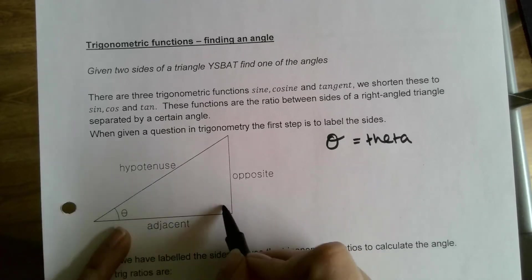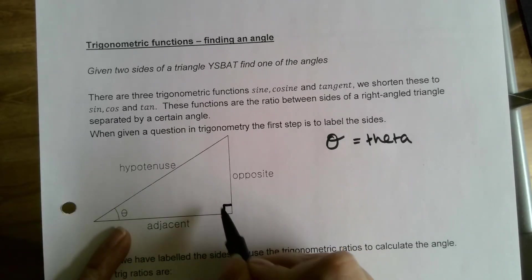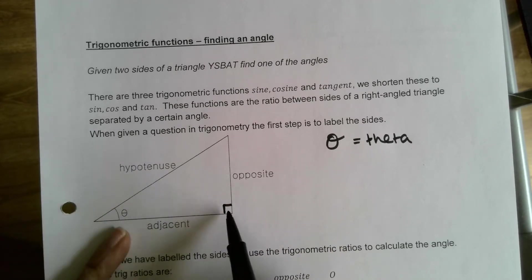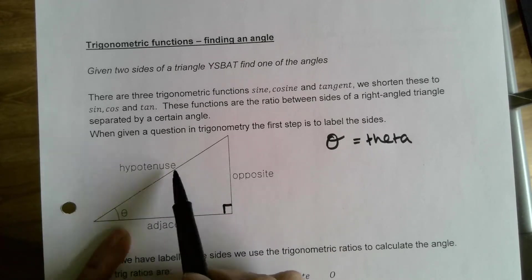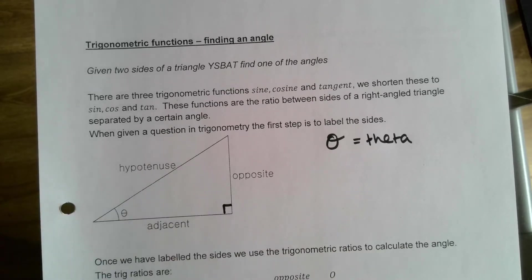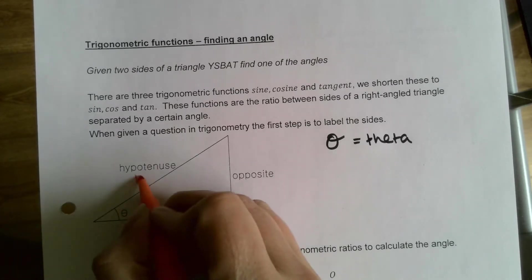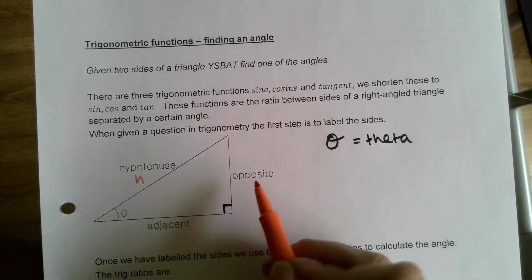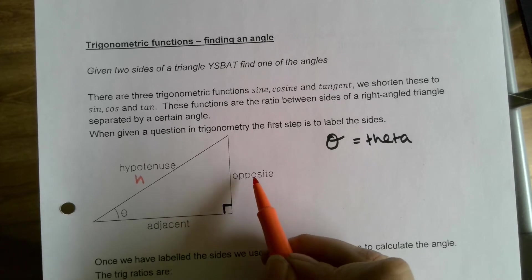With our right angle triangle, same as when we were doing Pythagoras, the side that is opposite the right angle - the longest side - is called the hypotenuse. Whenever we're labeling our triangles, you don't have to write the full word every time; you can just write H for hypotenuse. The next one we label is the opposite - the opposite side is always the one directly opposite the angle the question is using.